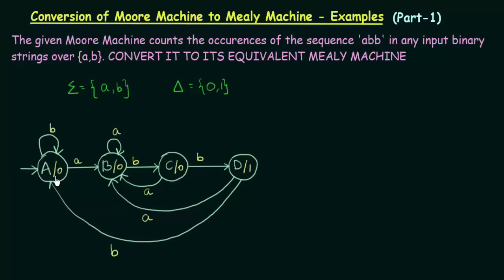We have 4 states here: A, B, C, and D. We have the input ABB, and whenever we reach state D, we make sure that we have encountered the string ABB. When you reach state D, you print a 1 because ABB was encountered. In all other cases, we printed 0. This is the Moore machine for that.